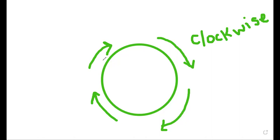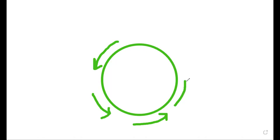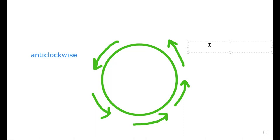Let's see what is anticlockwise. Now we have the same circle. When you move from left to right — the opposite side — we call it anticlockwise. Anti means left to right, and clockwise means from right to left.